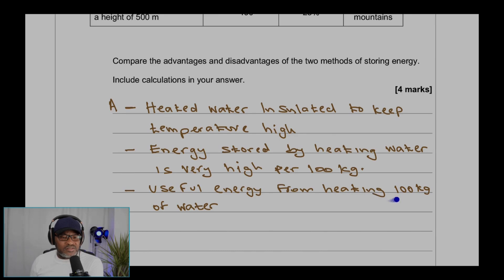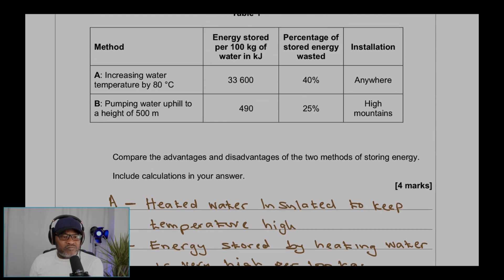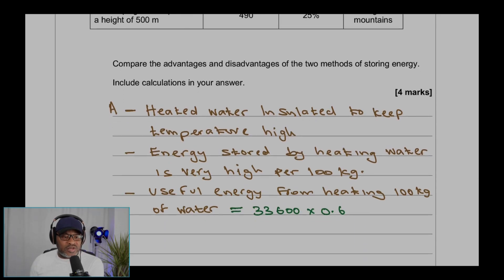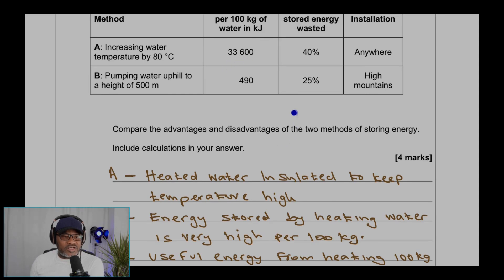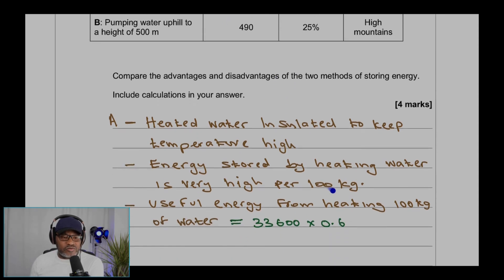We have useful energy from heating 100 kilograms of water. That useful energy can be calculated because you know 40% is wasted, so 60% is not wasted. That means the useful energy from heating 100 kilograms of water will be the energy 33,600 times 60%, which is 0.6, and that value is 20,160 kilojoules.